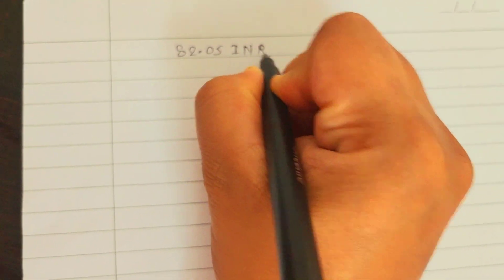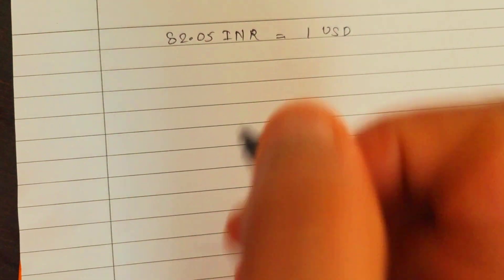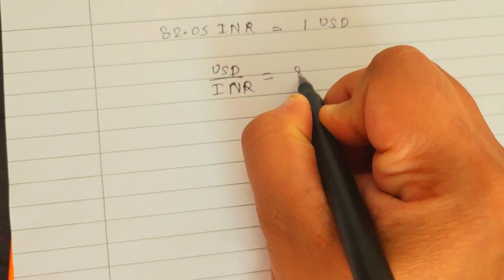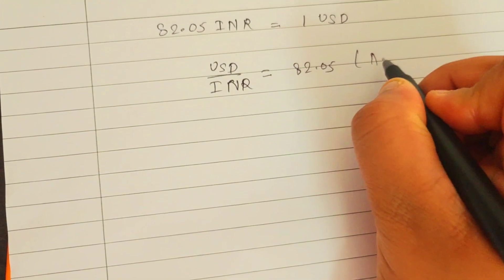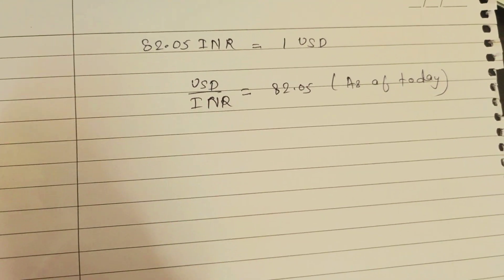Let's begin. I'll start with Indian currency, which is INR. Let's get into a relationship between INR and USD dollars. As of today, let's take an example that 82.05 INR is equivalent to 1 USD dollar. In the current scenario, the USD to INR ratio is 82.05 as of today.